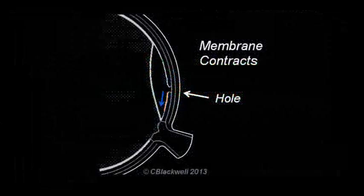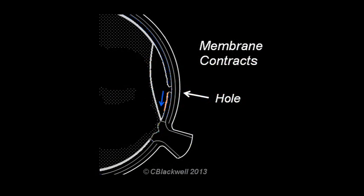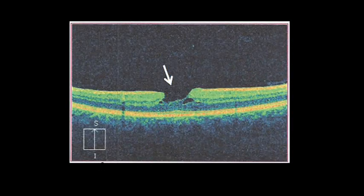Here is an alternate situation where the vitreous remnant is on one side of the fovea. When it contracts, it pulls on the fovea horizontally, another mechanism for creating a macular hole, here seen on OCT scan.